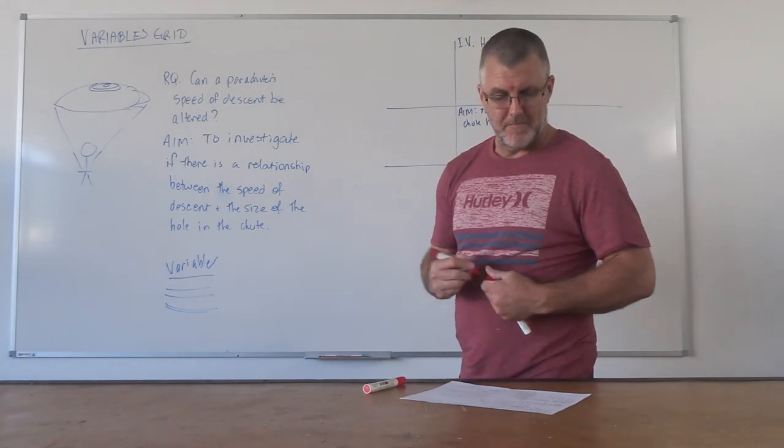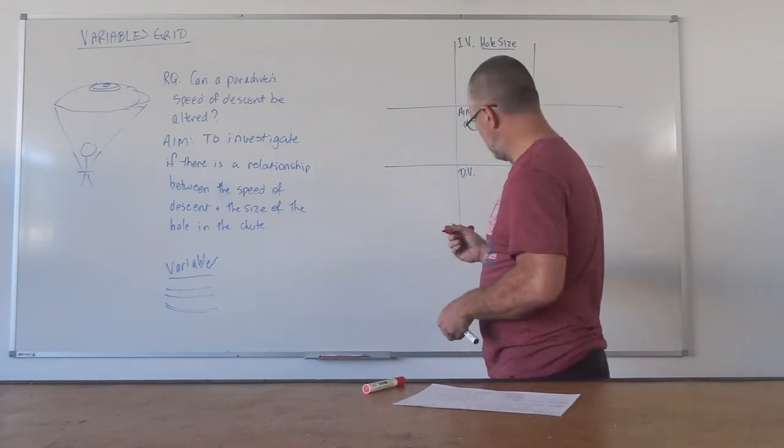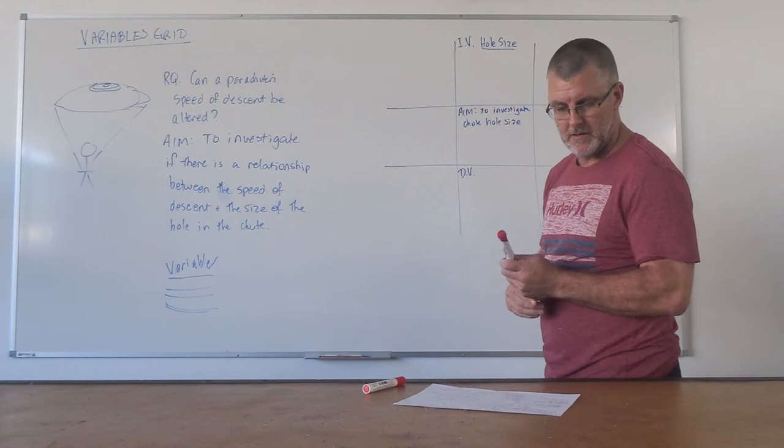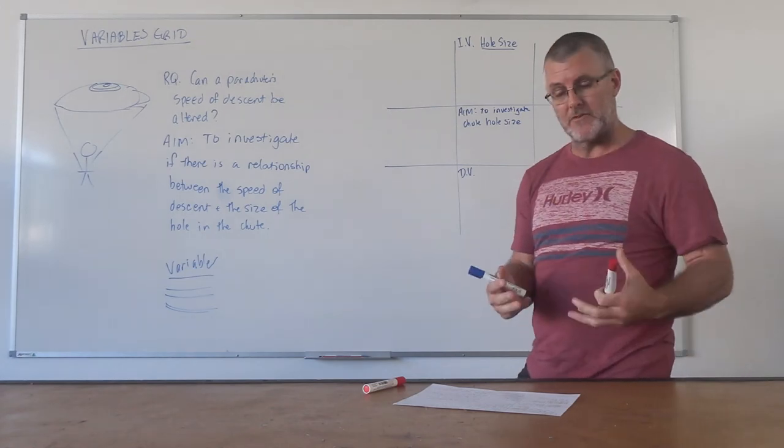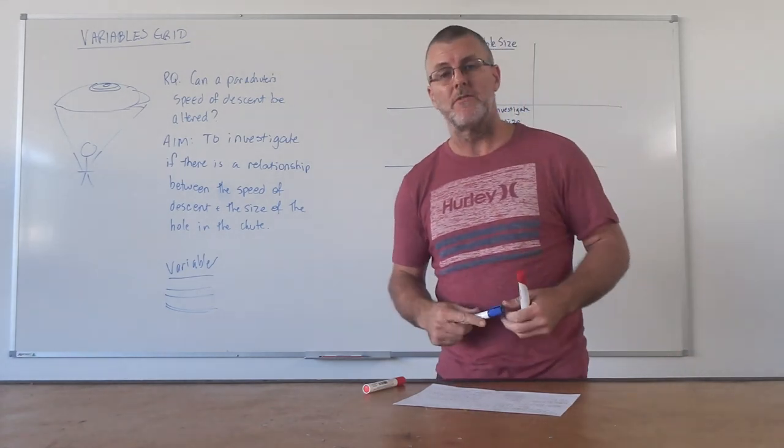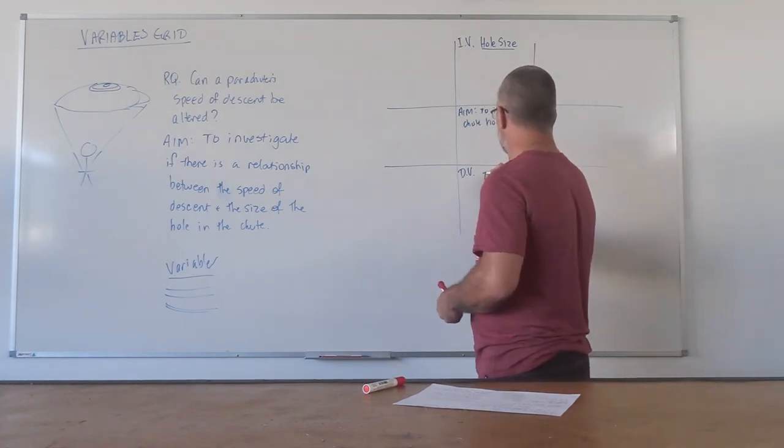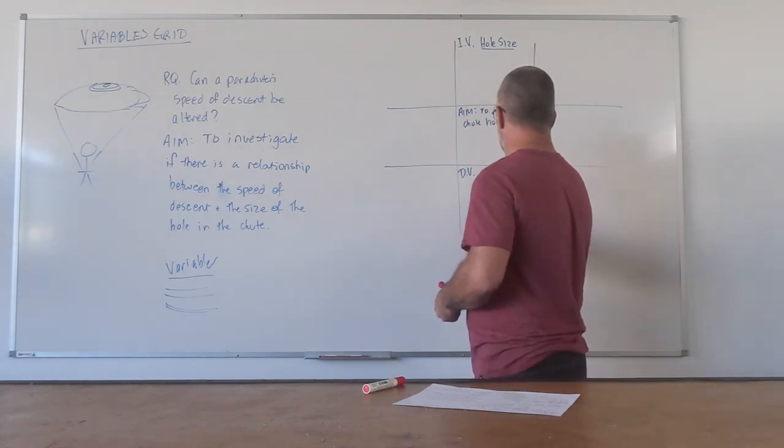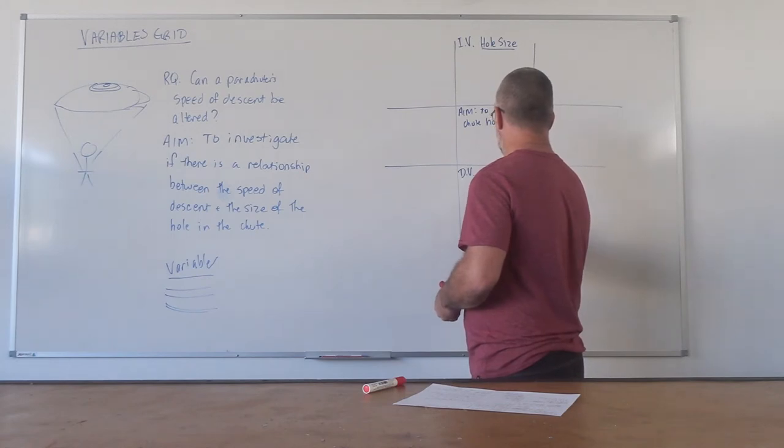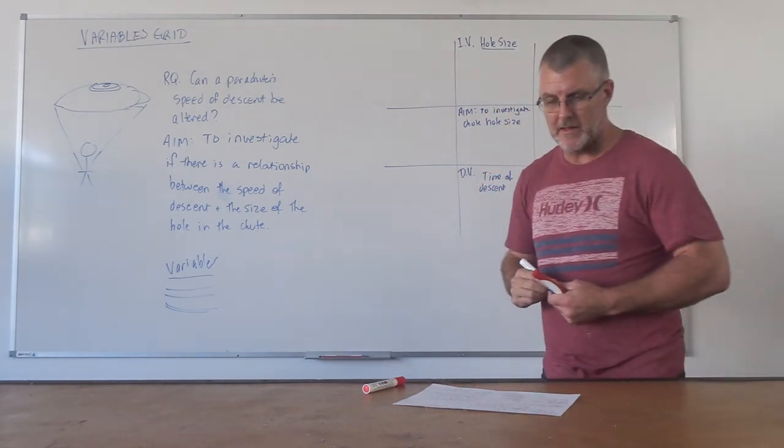And my dependent variable is going to be the measurement of what I'm actually trying to measure to determine if the hole size makes a difference. And in this case, that's going to be the time, the time of the descent. And we'll probably measure that in seconds.